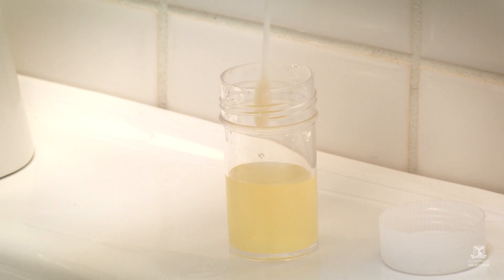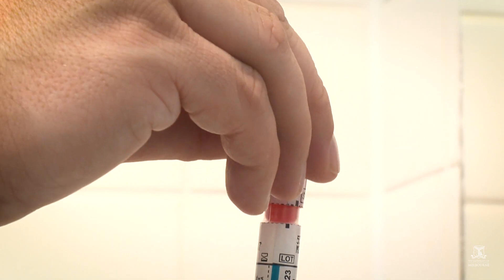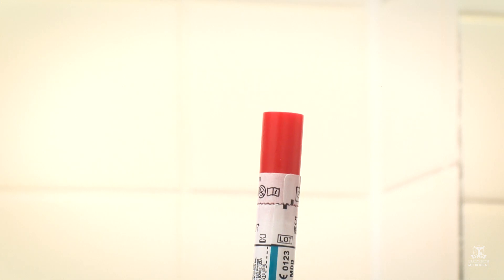Dip the soft tip of the swab into the urine. Keep the swab in for 10 seconds. Remove the swab from the pee and put it back into the plastic tube. Press the red cap until you feel it click securely.